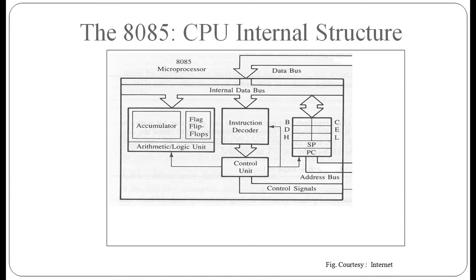We can see a figure here showing the internal structure of the 8085 microprocessor CPU. Different components include the accumulator, flag flip-flops, ALU, instruction decoder, and control unit. There are also registers B, C, D, E, H, L, stack pointer, and program counter — all connected with different types of buses. You can see the internal data bus, address bus, and control signals, with arrowheads showing directions, some bi-directional.